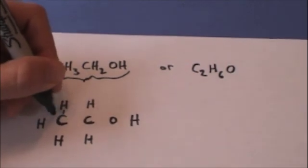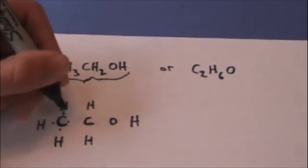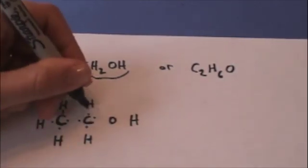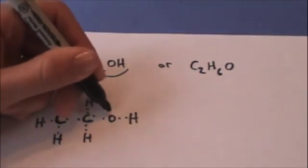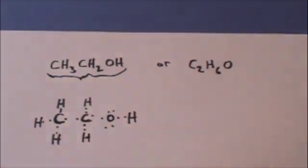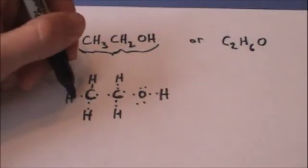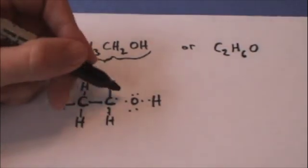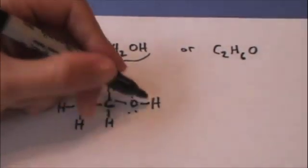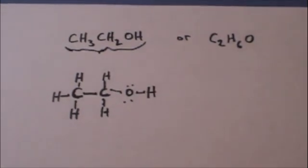And then now we could draw our Lewis dot structures, or Lewis dots. Hydrogens have one valence electron, oxygen has six, carbons have four, and then connect the valence electrons. And that is the Lewis dot structure for ethanol.